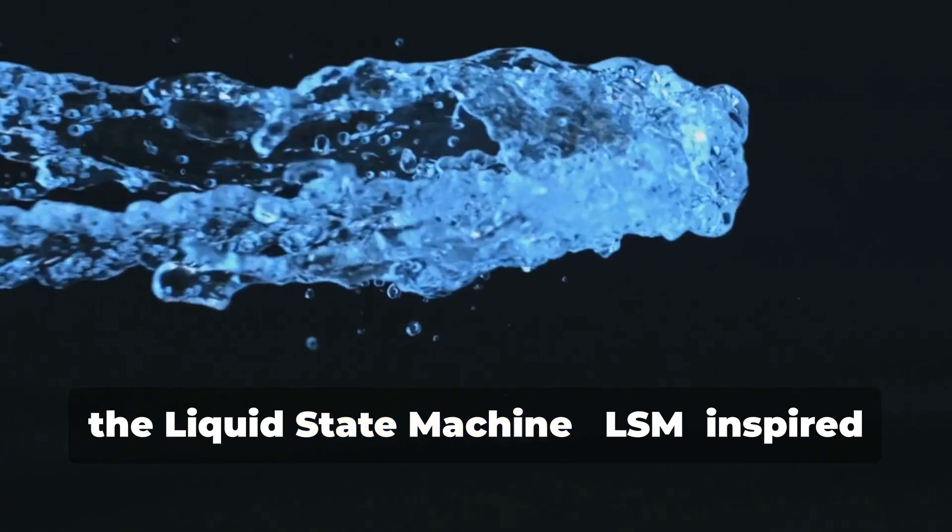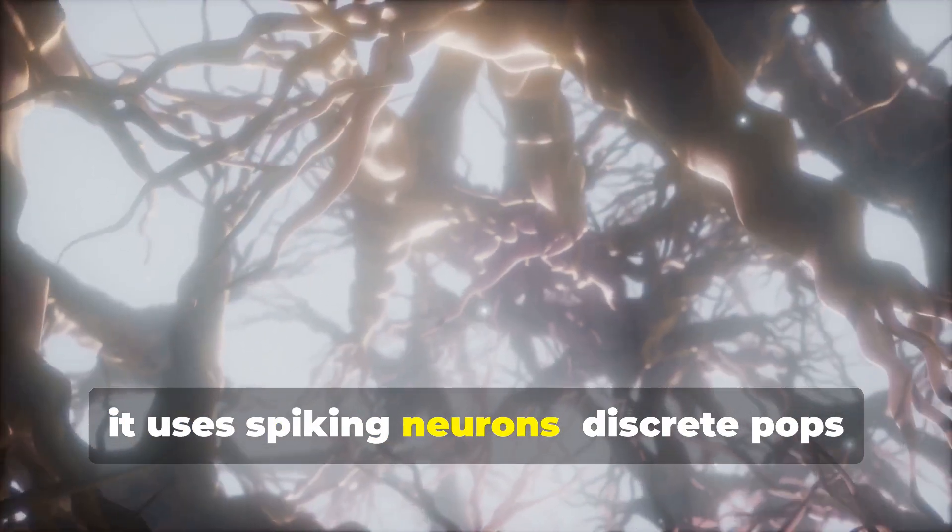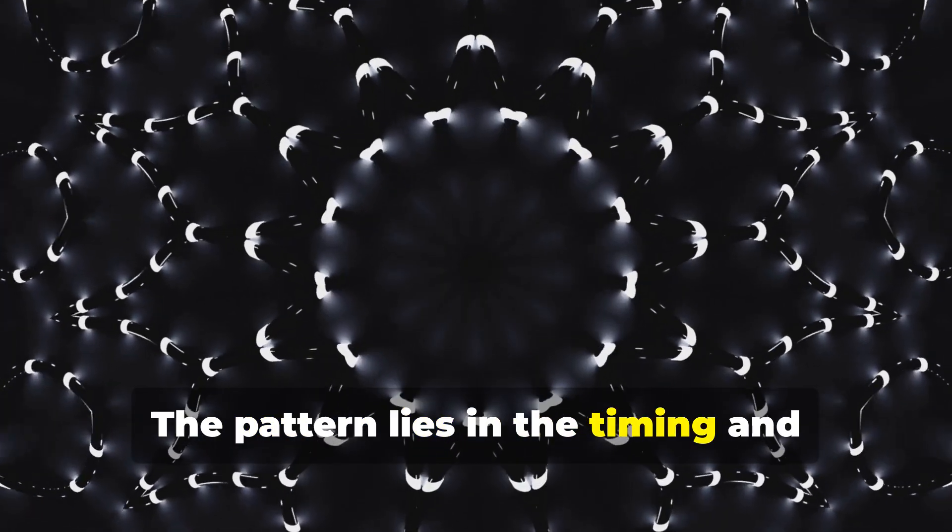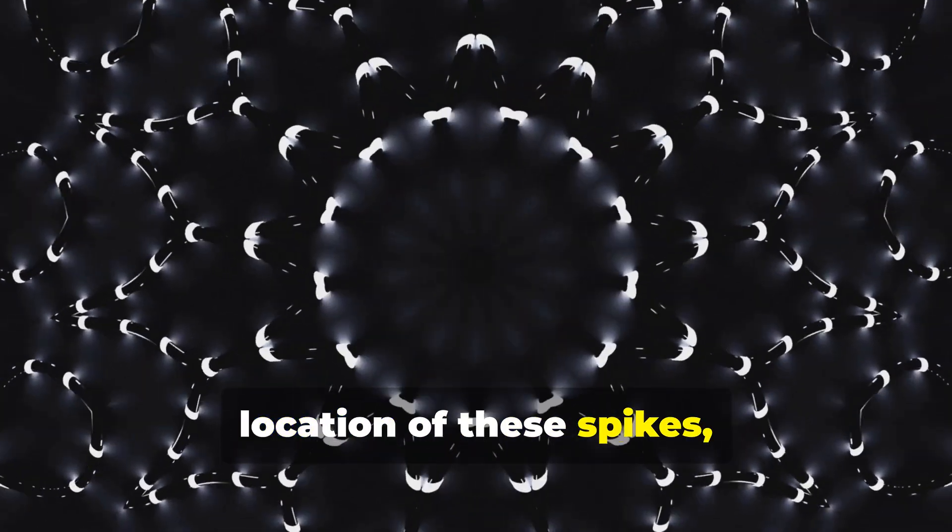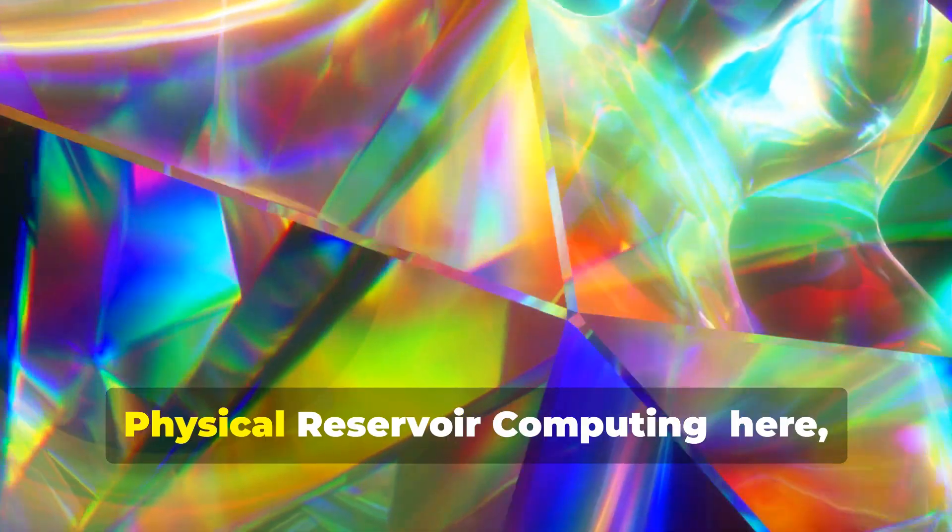Next, the liquid state machine (LSM), inspired by the brain's cortex. It uses spiking neurons—discrete pops instead of smooth ripples. The pattern lies in the timing and location of these spikes, making LSMs more biologically realistic.